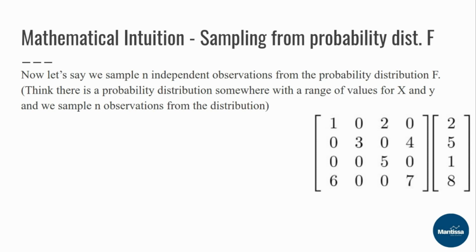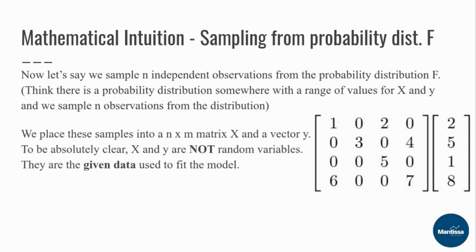You can see this here: on the left-hand side the matrix is your x values — a four-by-four matrix with four rows and four columns — and your y is a four-by-one vector with four rows and one column. This is how the data looks. We place these samples into an n-by-m matrix X and a vector y. To be absolutely clear, x and y here are not random variables — they are the given data used to fit the model.